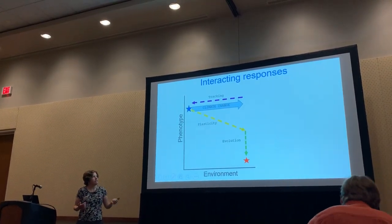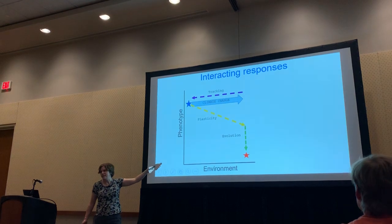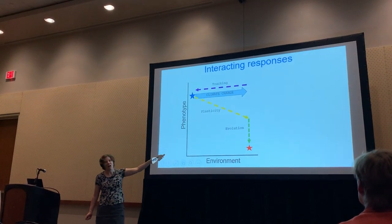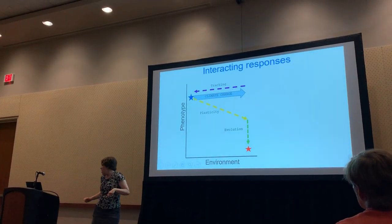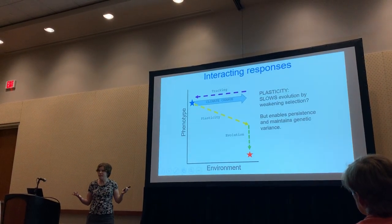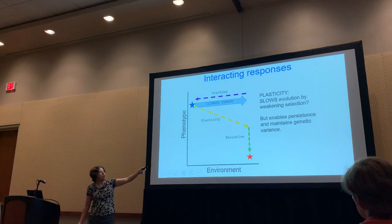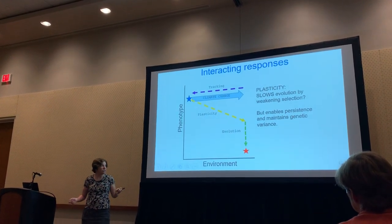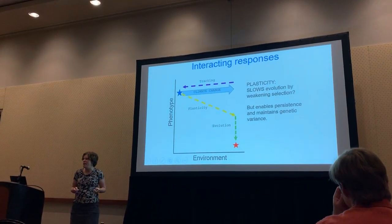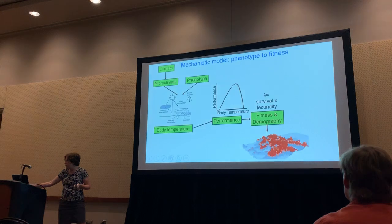What we've been focusing on is this interaction of plasticity and evolution. A varying slope of plasticity influences how much space there is between the current phenotype and the optimal phenotype for selection to act on. Depending on that slope, plasticity can slow evolution by weakening selection, or alternatively enhance evolution by enabling persistence and maintaining genetic variance. We've been looking at those roles particularly in the context of environmental variability.